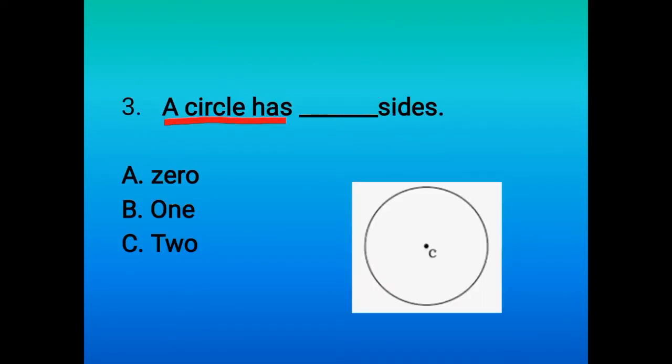A circle has dash sides. We know very well that a circle has no sides, so the correct answer is option A. Circle has 0 sides.